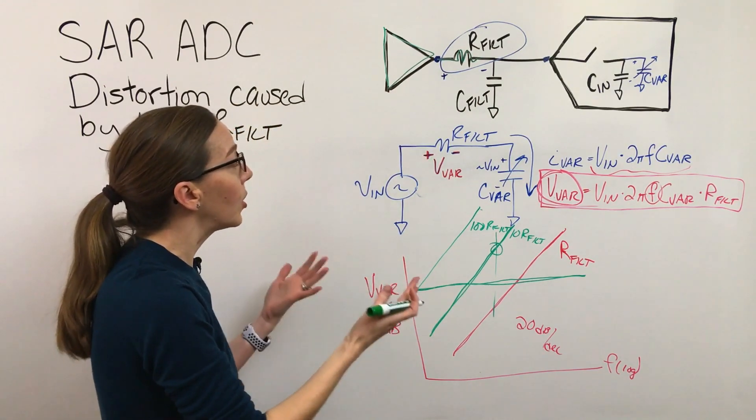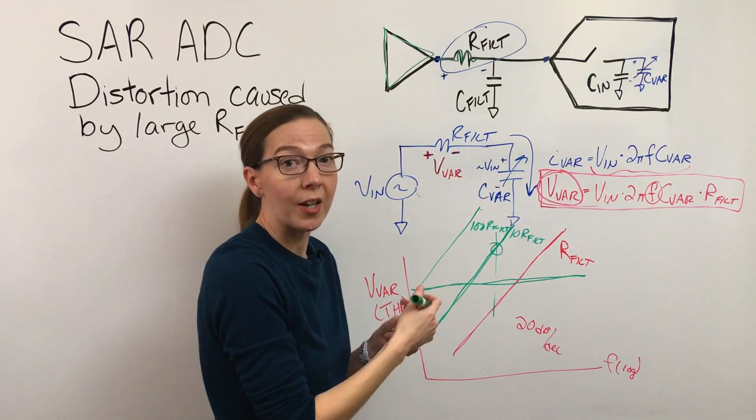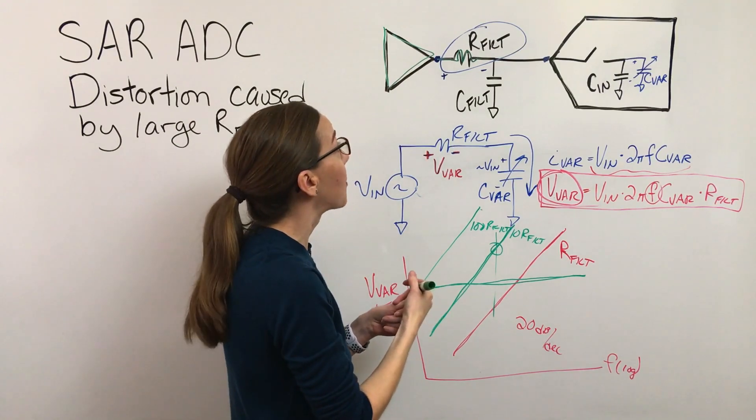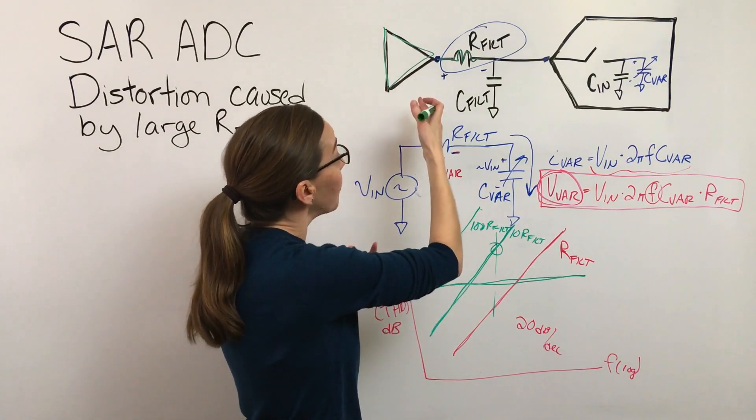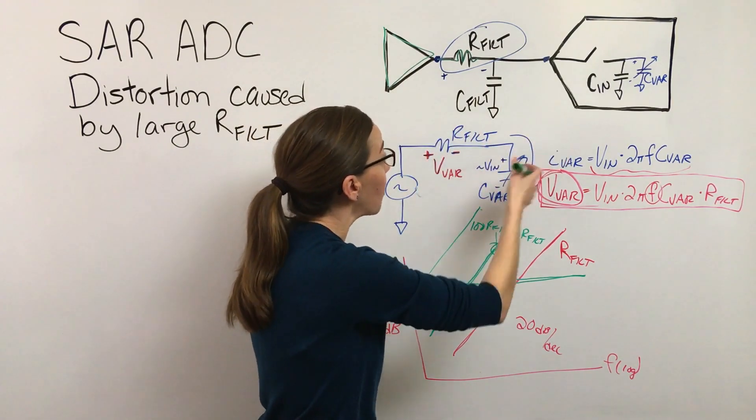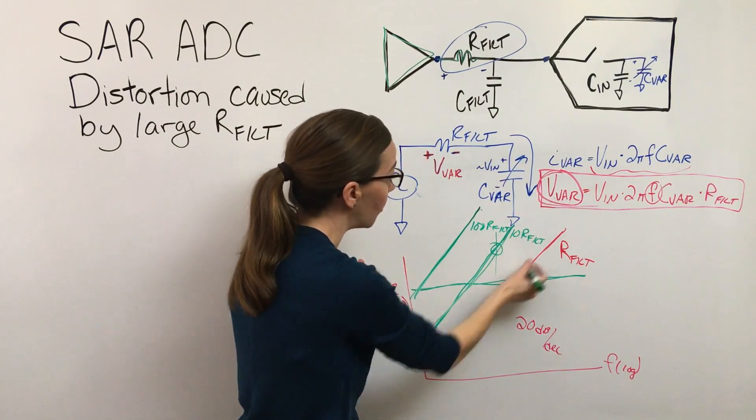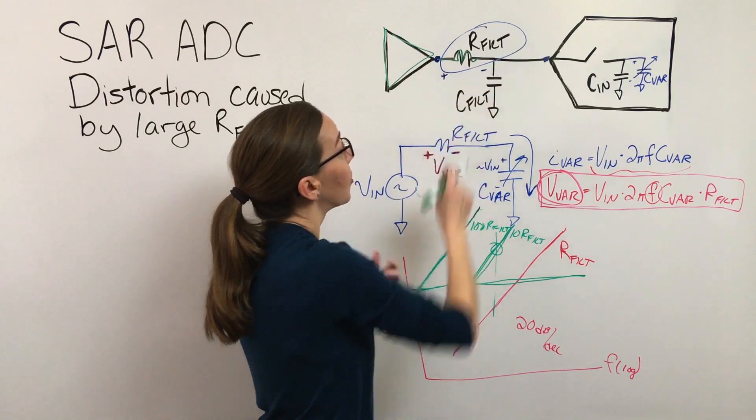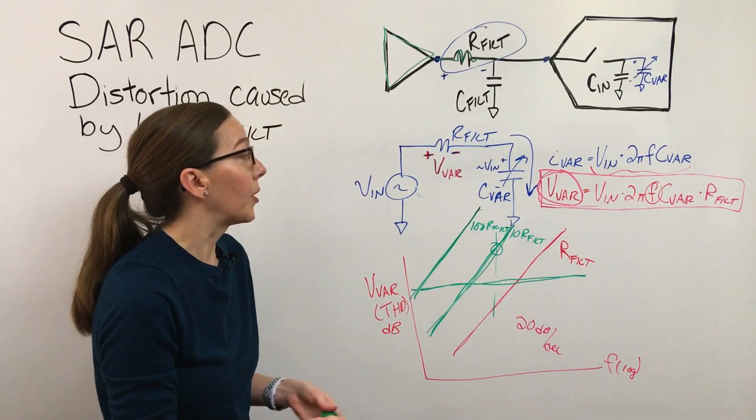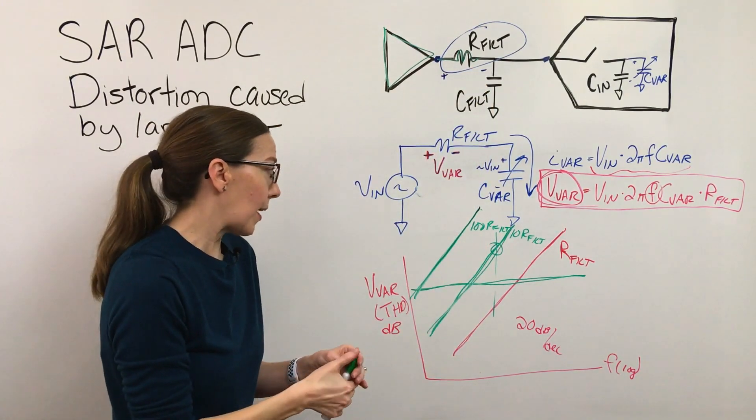So this is the point where you're sort of between a rock and a hard place. It helps to understand how the driver's working and the ADC is working and to understand that this is the curve that's moving on you as you change this resistor value.